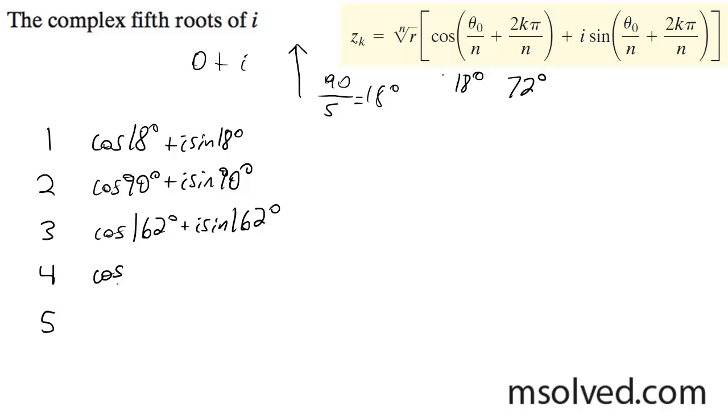And then, at another 72, we get cosine of 234 degrees plus i sine of 234 degrees. And then, finally, cosine of 306 degrees plus i sine of 306 degrees. That's it. Those are our solutions.